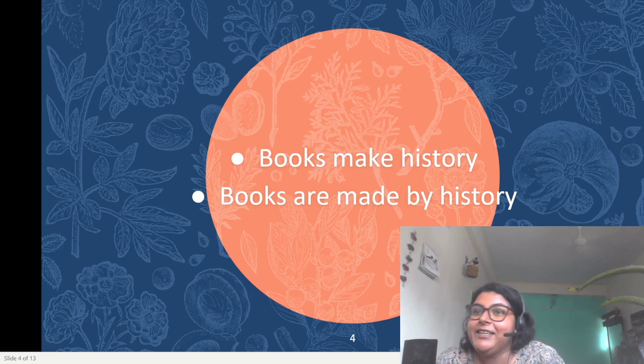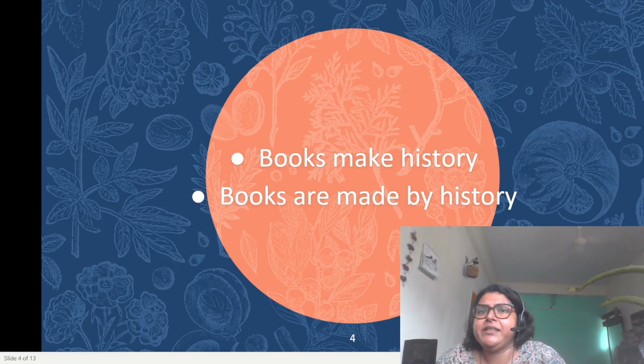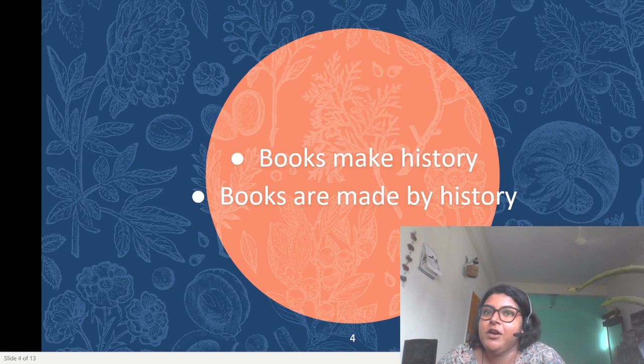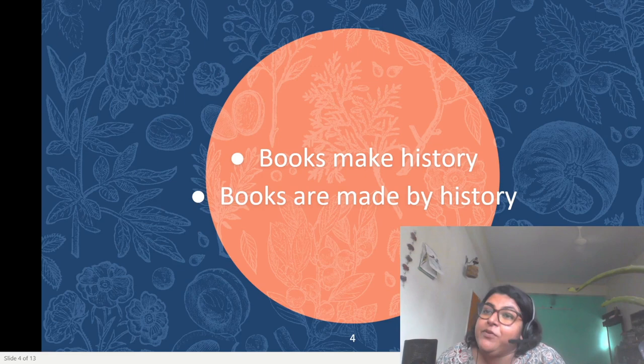It is based on two apparently simple premises which have inspired some strikingly original work in the humanities. The first is that books make history. The second is that books are made by history — they are shaped by economic, political, social, and cultural forces. No book is created solely by its author; printers, publishers, literary agents, editors, designers, and lawyers all play a role in moulding the final product. Critics, booksellers, and educational bureaucrats can proclaim a book a classic or consign it to oblivion.